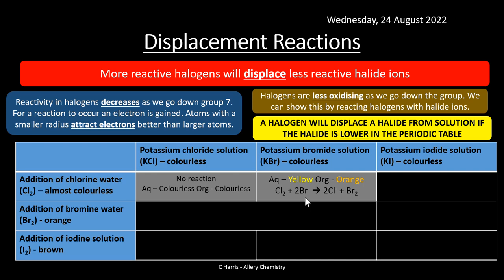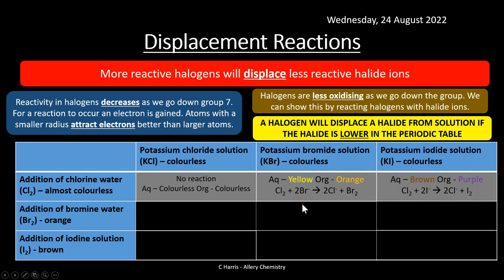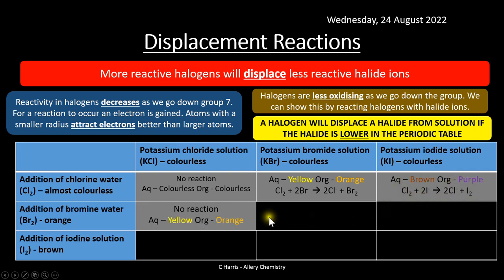Chlorine reacting with potassium iodide: chlorine is more reactive than iodine, so a displacement occurs. The aqueous layer turns brown and the organic layer turns purple. Chlorine reacts with iodide ions to form Cl⁻ and I₂. Iodide is oxidized to iodine and chlorine is reduced to chloride ions.